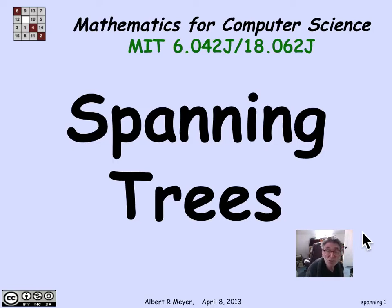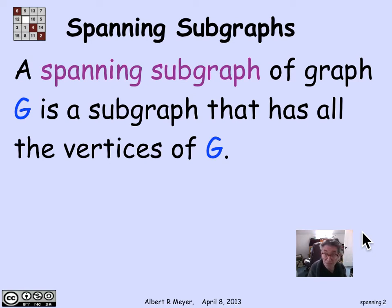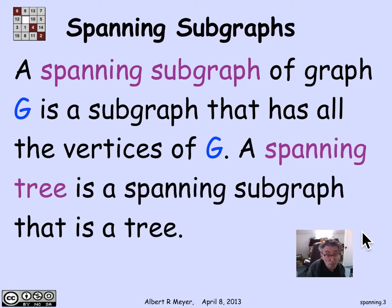One of the multiple definitions of trees is that it's a minimum edge simple graph that connects up a bunch of vertices. That leads to the idea of finding a spanning tree within a simple graph that maintains the same connection. A spanning subgraph of a graph G is simply a subgraph that has all the vertices of G. A subgraph means it has a subset of the vertices and a subset of the edges. A spanning subgraph has all of the vertices but a subset of the edges. And the definition of a spanning tree is a spanning subgraph that is a tree.